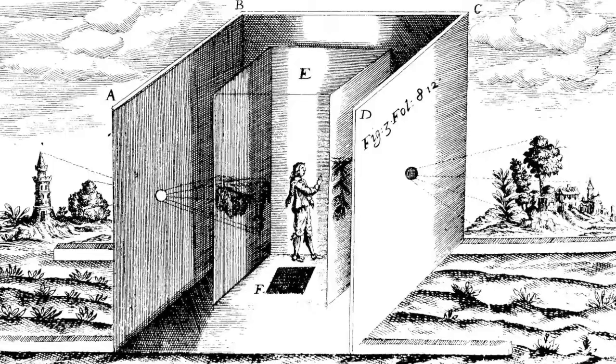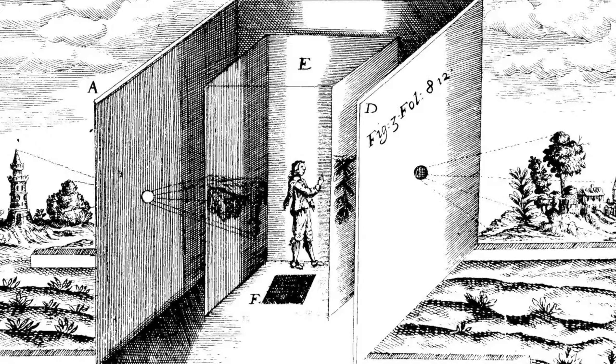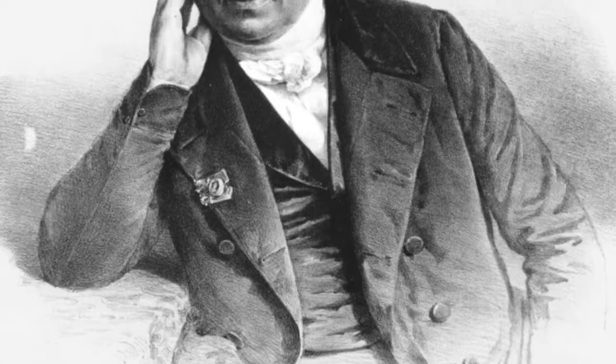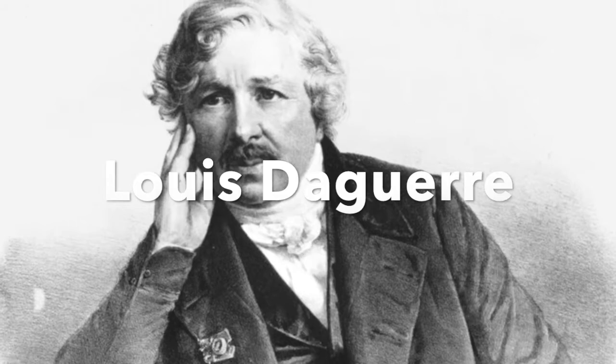The image Niépce captured using the pinhole box method was not meant to last, however, as over time the image, which was projected onto a thin metal plate, eventually wore off. This proved that Niépce's initial idea would not yield permanent results, and something had to be either added or changed. While the very first photograph still exists, the image Niépce originally created is not very visible and can be hard to make out today. Another man, known as Louis Daguerre, took Niépce's idea, improved on the technique, and changed the materials used to retain the projected image, and developed the daguerreotype.